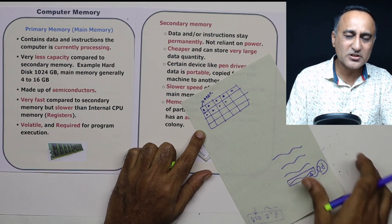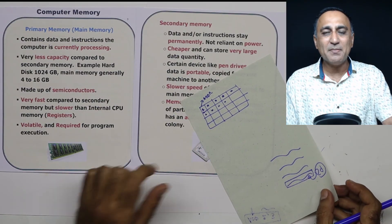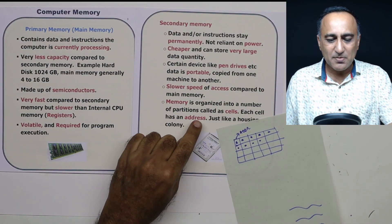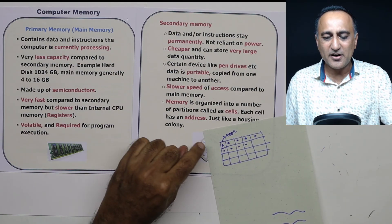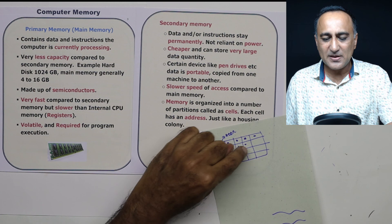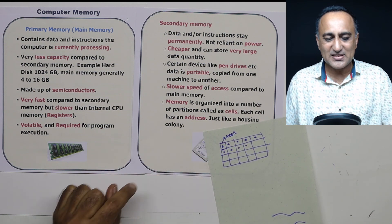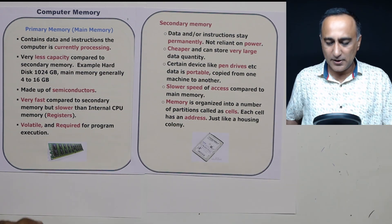So this is square boxes. You can think of as memory cells and each memory cell has an address. So your main memory is basically divided into bits and pieces like this into a number of cells, just like your housing colony.